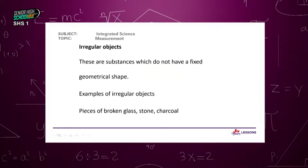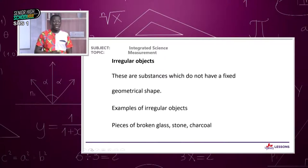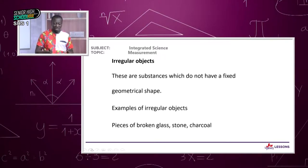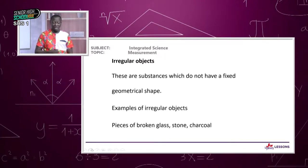For irregular objects, before we proceed: to find the density of a regular object, get the object, weigh it on a weighing scale to determine its mass, then use a ruler or appropriate equipment to measure the dimensions and apply the formula to calculate the volume. Divide the mass in kilograms by the volume in meter cube.